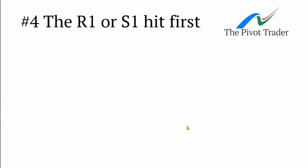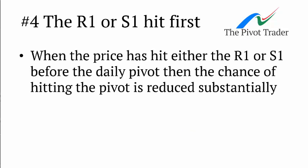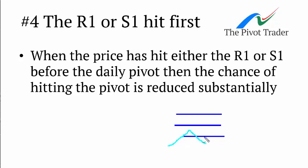Number four: the R1 or S1 when hit first. When price hits either the R1 or S1 before it's hit the daily pivot, the chances of then hitting the daily pivot is reduced quite substantially. To clarify: if that's the daily pivot, you've got your R1 above and S1 below — if price has already run into S1 and is running around that level, the chances of it coming back to hit the daily pivot are pretty low, particularly in a trending market.